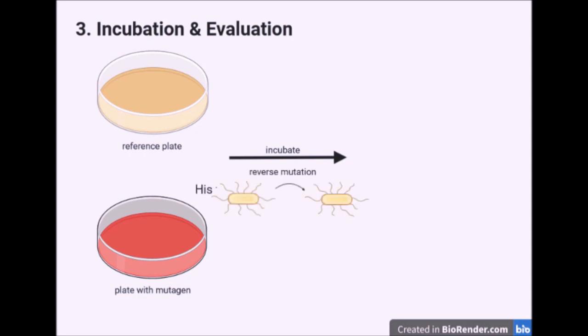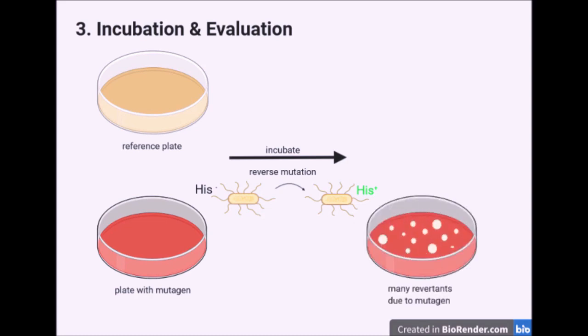Finally, the agar plates are incubated at suitable conditions. If the potential mutagen has mutagenic properties, reverse mutation will take place. The bacterial strain is now able to synthesize the amino acid histidine and can thus grow on the agar — therefore many colonies can be counted. On the reference agar plate, only a few colonies can be counted, due to natural reversion.